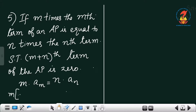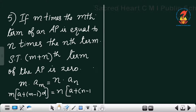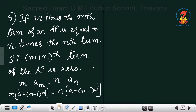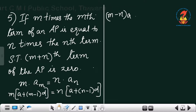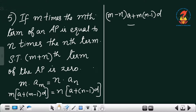Writing out the terms: m into [a plus (m minus 1)d] equals n into [a plus (n minus 1)d]. Taking all terms to the left side, we get (m minus n) into a plus (m squared minus n squared) into d equal to 0.